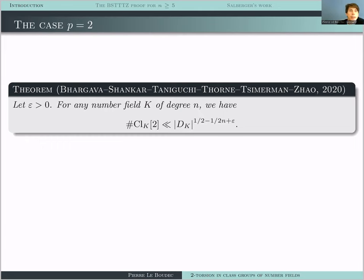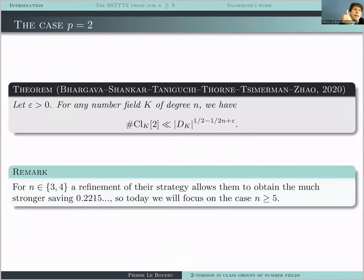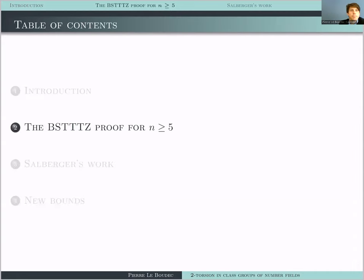When N equals three or four, they have a refinement of their approach which gives a much better saving — something like 0.2215 — which is much better than one over eight when N=4. Today I'm going to focus on the case where P=2 and N is at least five, because the result is just too good when N equals three or four and we don't know how to get close to what they achieved there.